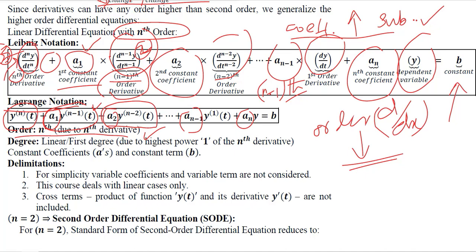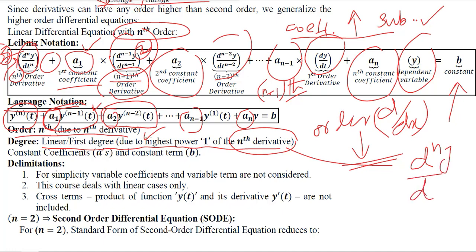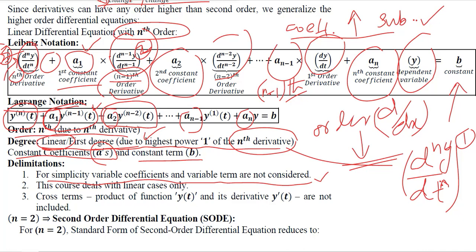We are assuming that the equation is linear and of first degree — the nth order derivative term has a power of 1, so it is linear. The constant coefficients a1, a2, a3, and so on are present, along with the constant term b. For simplicity, variable coefficients and variable terms are not considered — we have taken the case of constant coefficients and constant terms. This simplifies the situation considerably.